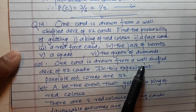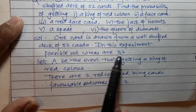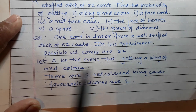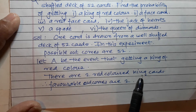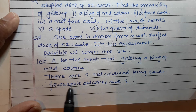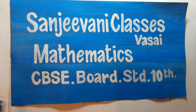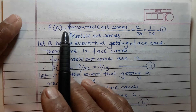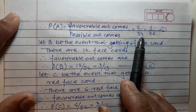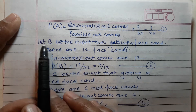Solution: one card is drawn from a well-shuffled deck of 52 cards, so in this experiment possible outcomes are 52. Let A be the event of getting a king of red color. There are two red-colored king cards, and therefore favorable outcomes are two. Hence P(A) is equal to favorable outcomes upon possible outcomes, equal to 2 upon 52, equal to 1 upon 26. Answer number one.